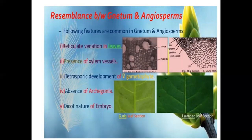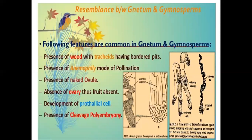Resemblances between Natum and angiosperm: the following features are common in Natum and angiosperm — reticulate venation in leaves, presence of xylem vessels, tetrasporic development of female gametophyte, absence of archegonia, and dicot nature of embryo. Resemblances between Natum and gymnosperm: the following features are common — presence of wood with tracheids having bordered pits, presence of anemophily mode of pollination, presence of naked ovules, absence of ovary thus no fruit or fruit wall, development of prothallial cells, and presence of cleavage polyembryony.